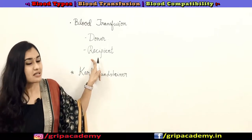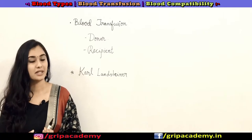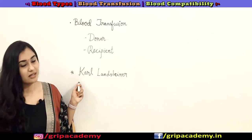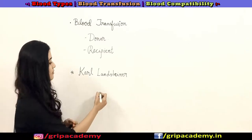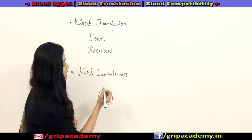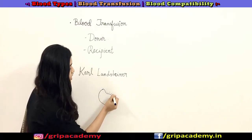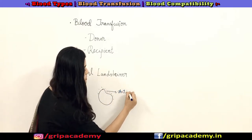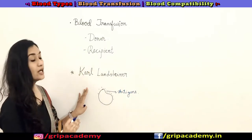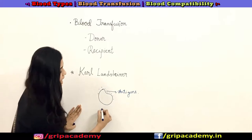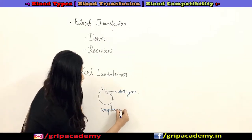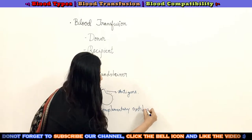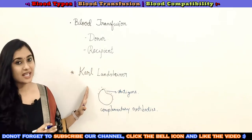The concept of blood grouping and compatibility was first discovered by Karl Landsteiner. Our RBC cells have specific proteins on their surface which we call antigens, and our blood plasma will always have complementary antibodies to those antigens.